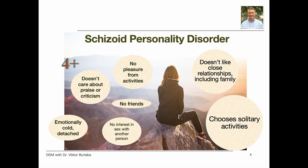People with schizoid personality disorder remain isolated and have a narrow emotional range. They prefer solitary activities and neither want nor enjoy close relationships, including those with family. They may have no close friends, enjoy few activities, and show little interest in sex with others. Emotionally cold or detached, they seem indifferent to both criticism and praise.